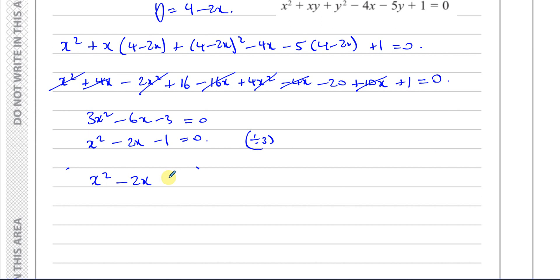We could use either the formula or completing the square. Some students might ask why not just use a calculator — but on pure papers, quadratic equations should be solved by factorizing, the quadratic formula, or completing the square. It's always better to be safe and show your working, using your calculator only as a check.